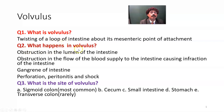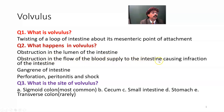What happens in volvulus? There is obstruction in the lumen of the intestine. So volvulus is an important cause of intestinal obstruction. There is also obstruction in the flow of blood supply to the intestine, and the return of blood from the intestine via the vein is also obstructed. That will lead to congestion and infarction of the intestine.